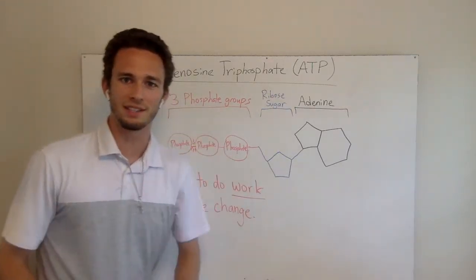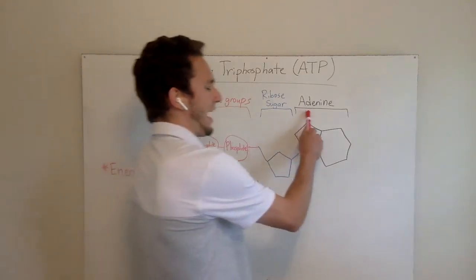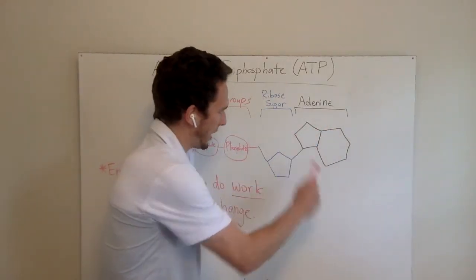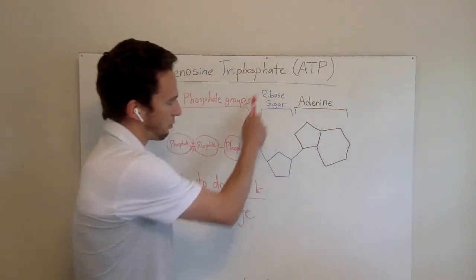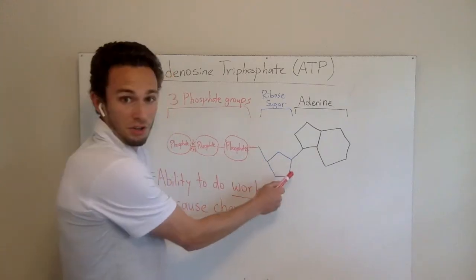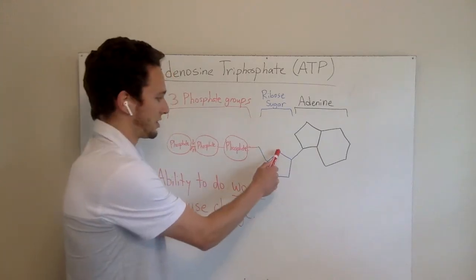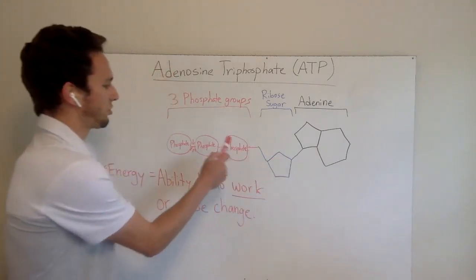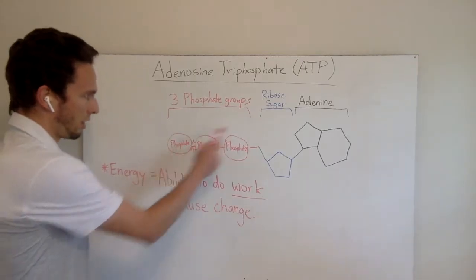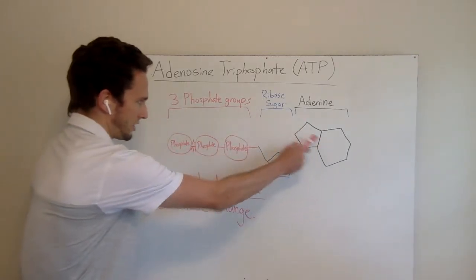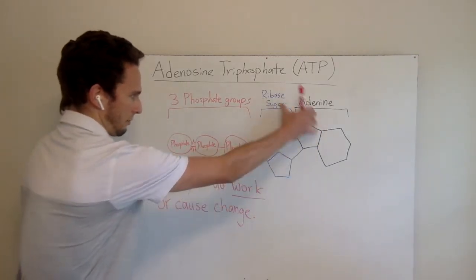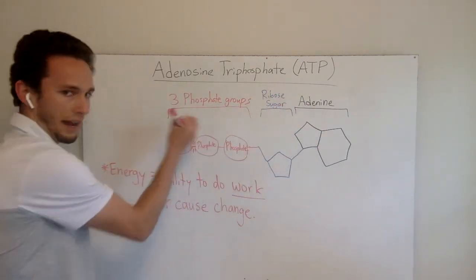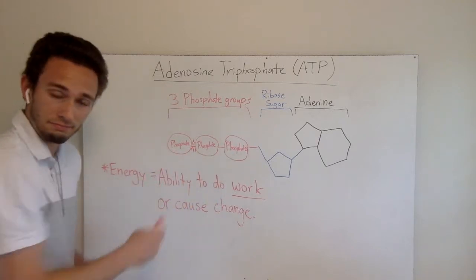This is why it's named the way it is. There's an adenine base, there's a ribose sugar — a pinto sugar because it has five points — and then it has three phosphate groups. Adenosine, combining these two, tri-3-phosphate.